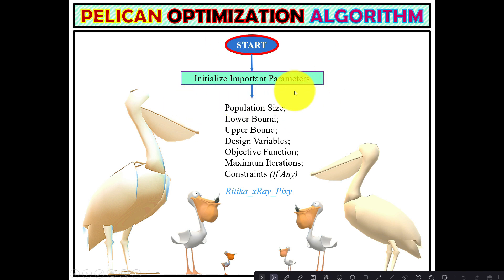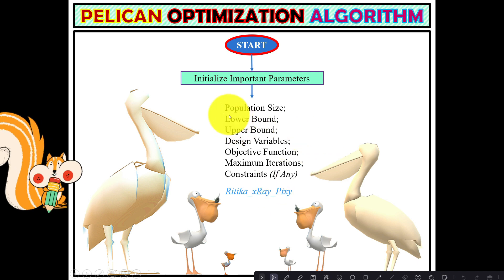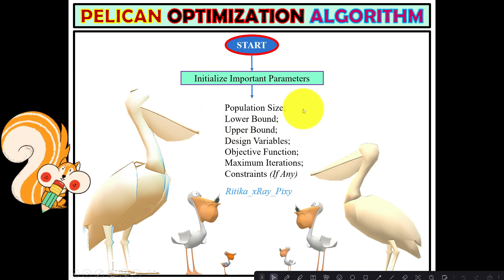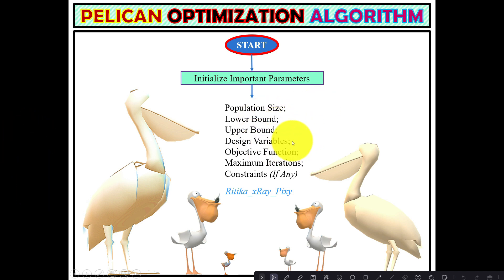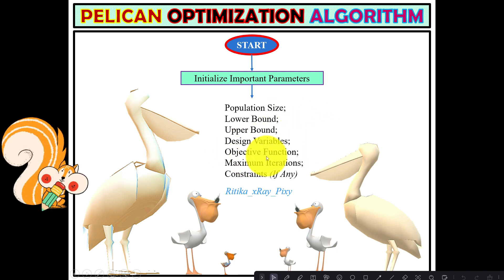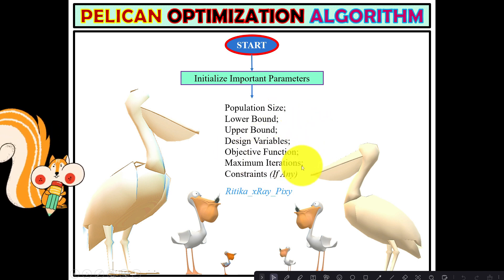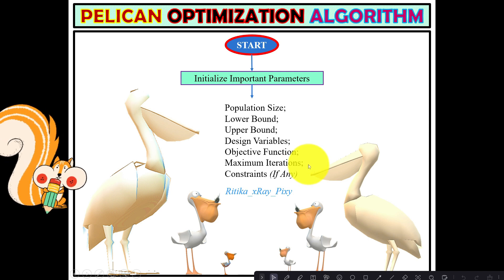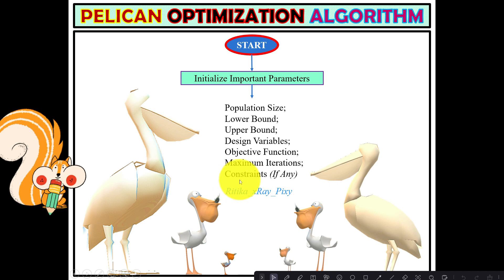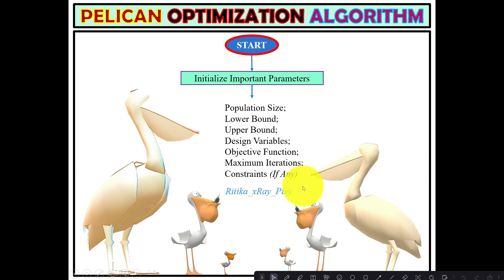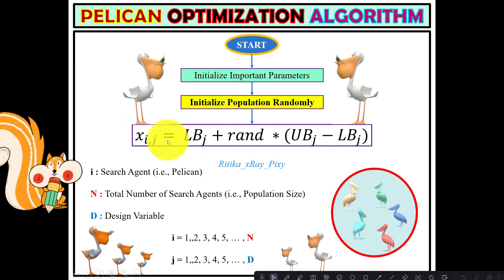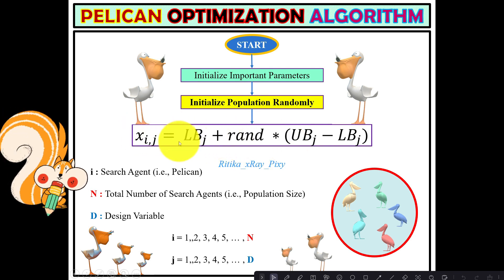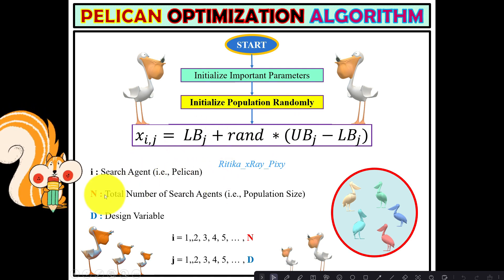First, all important parameters are initialized: population size (number of agents), lower bound, upper bound, design variables (search space boundary), objective function to optimize, maximum number of iterations, and any constraints. Next, the population for N agents is initialized randomly in the search space using the initialization equation, where i is the search agent (pelican), N is the total number of agents, and d is the search space dimension (1 to d).